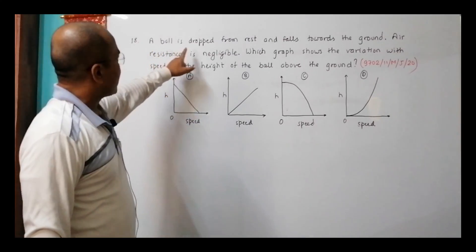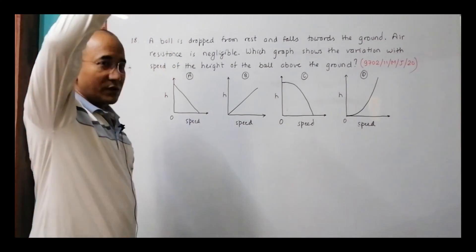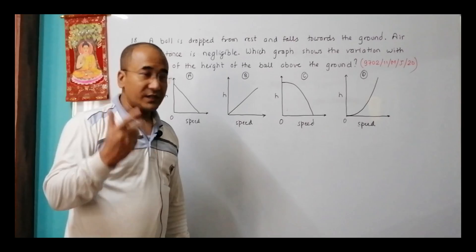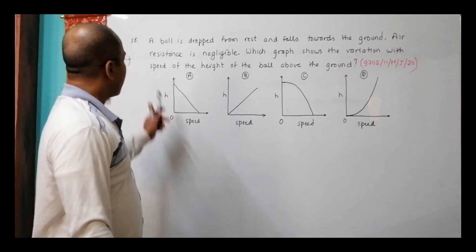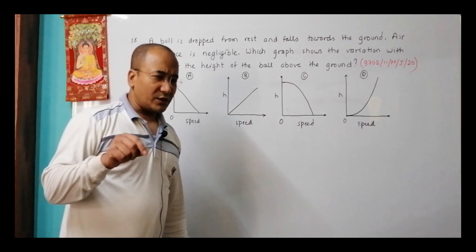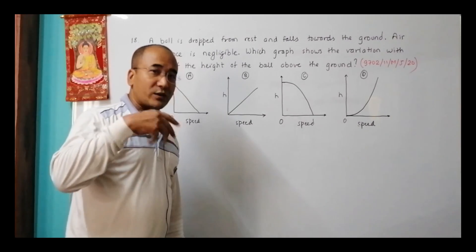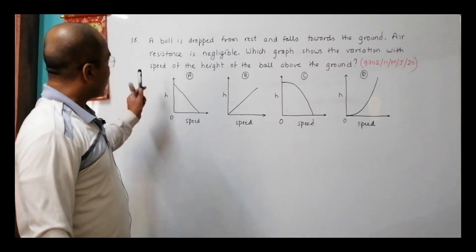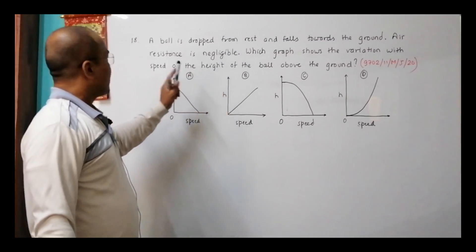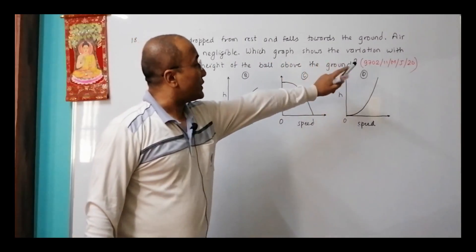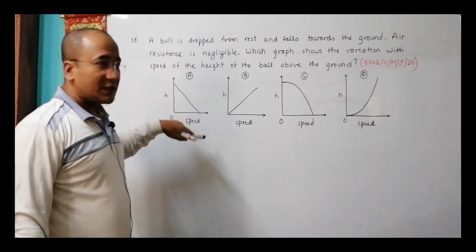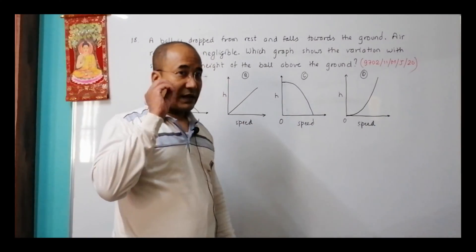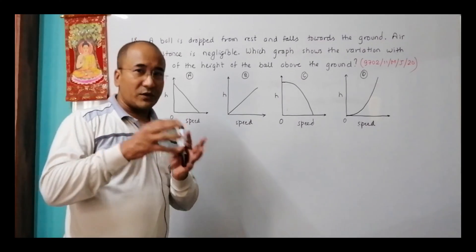The question says that a ball is dropped from rest and falls towards the ground. Air resistance is negligible, that means free fall, acceleration equal to g. We have to find which graph shows the variation of height with speed. We generally draw height with time or speed with time, but here we have to draw the graph of height versus speed of the ball above the ground.